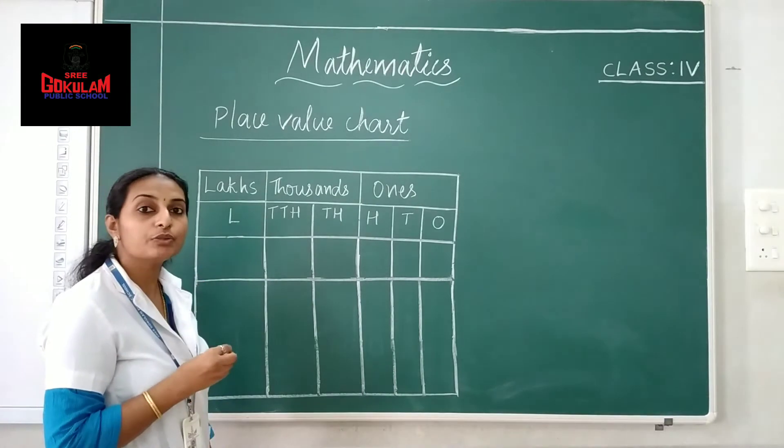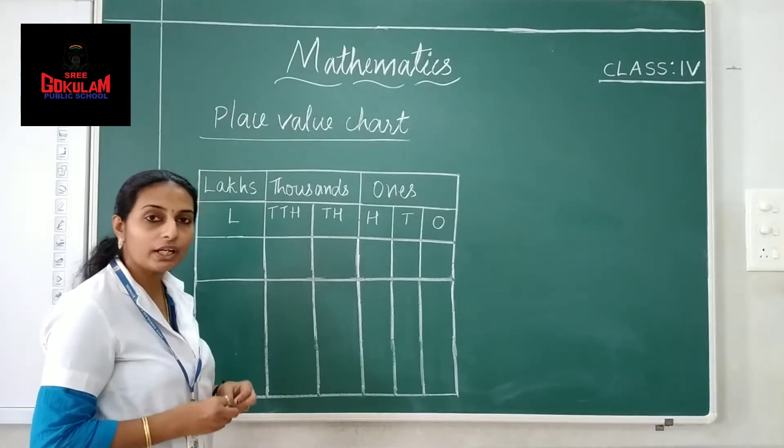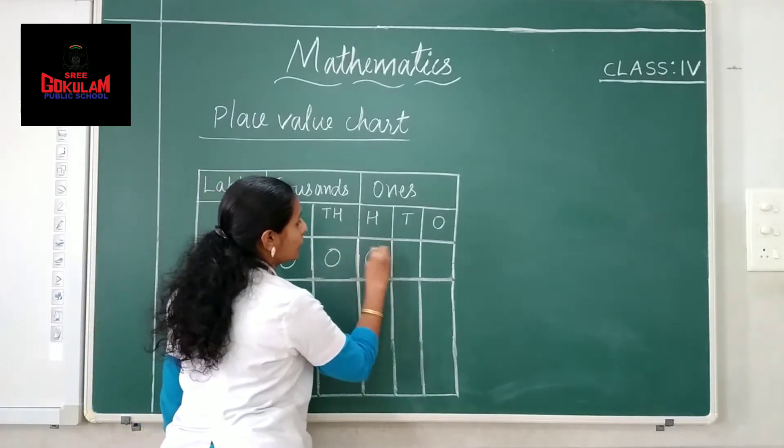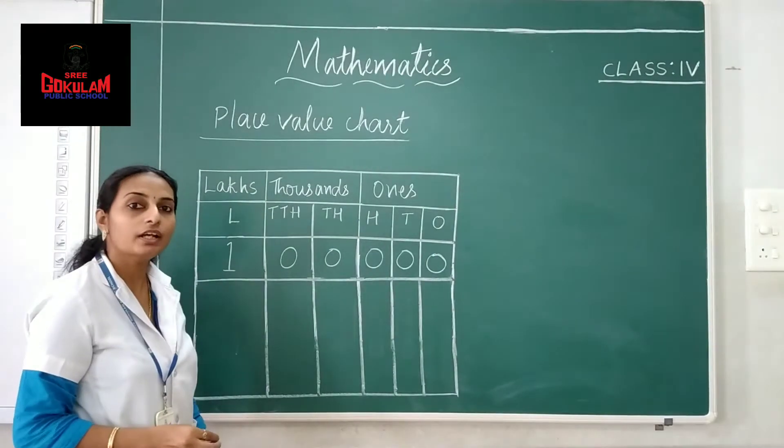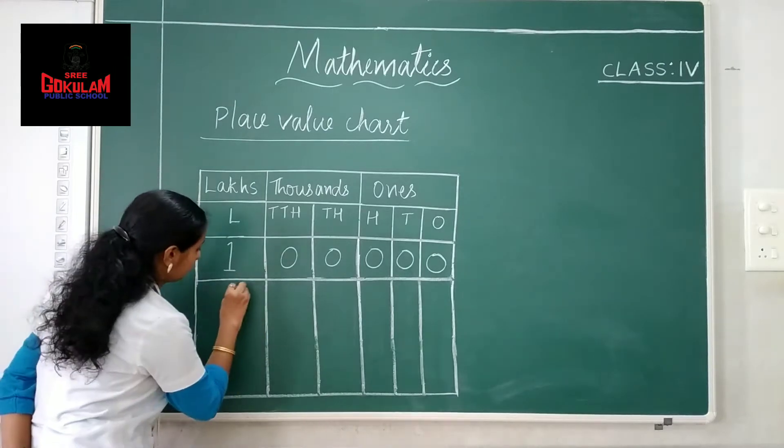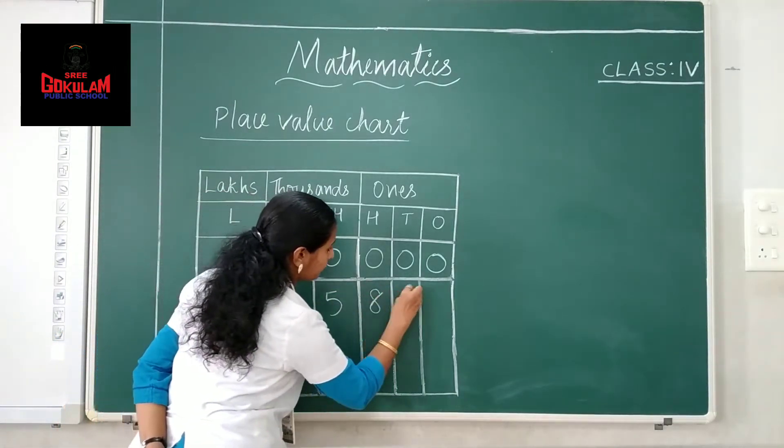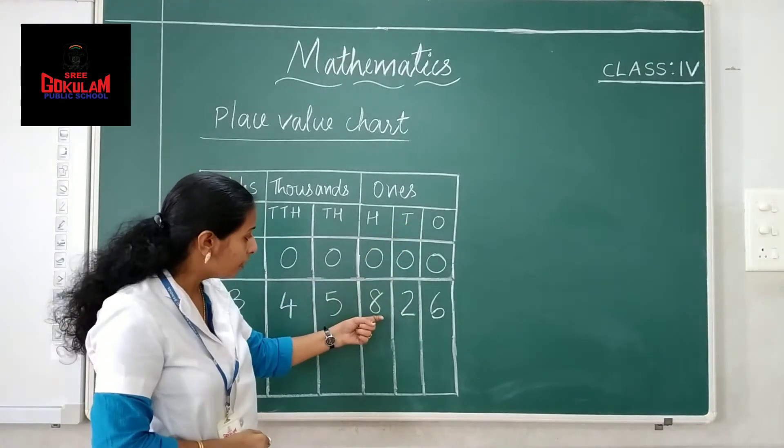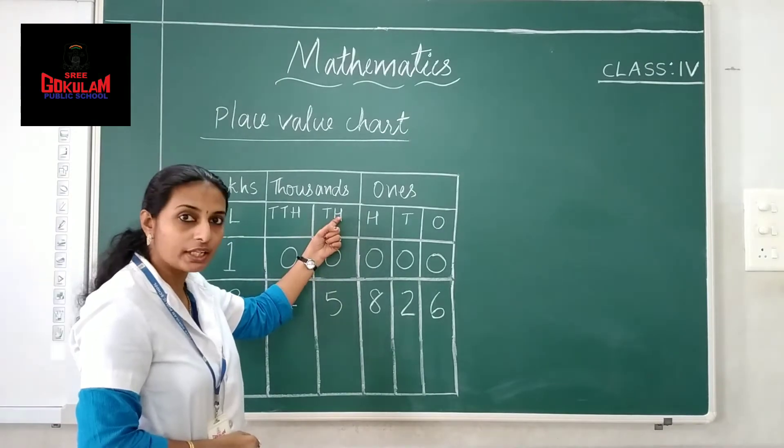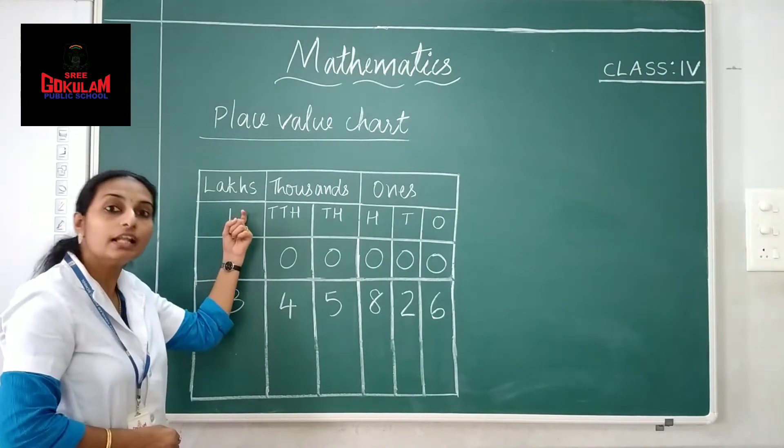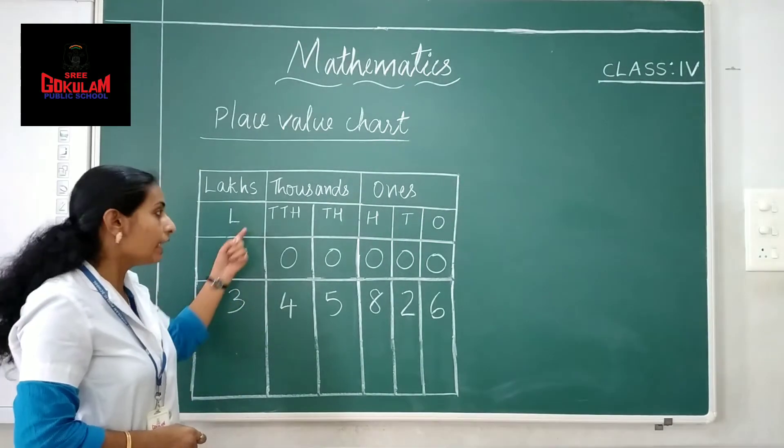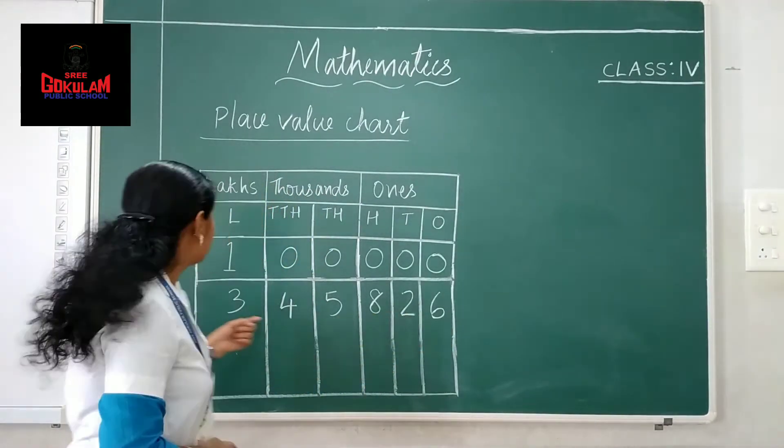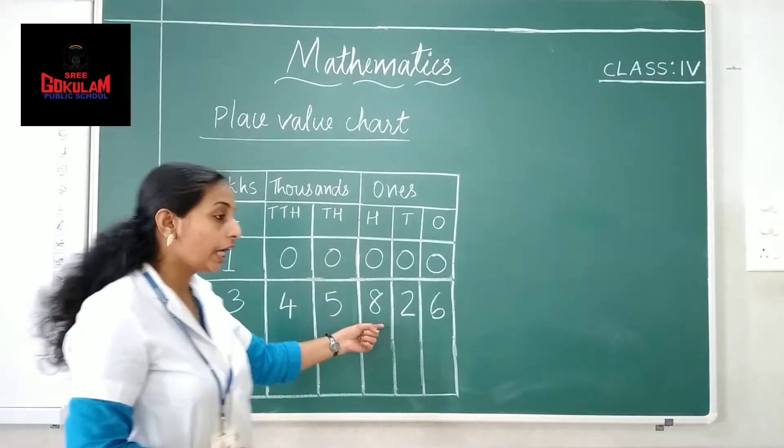Let us find out how to write 1 lakh in the place value chart. We can write 1 lakh as 1 in the lakh place and other places are 0. Next example. We have 6 ones, 2 tens, 8 hundreds, 5 thousand, 4 ten thousand and 3 lakh. Here we can read the number as 3 lakh 45,826.